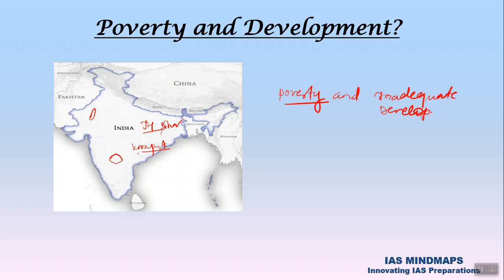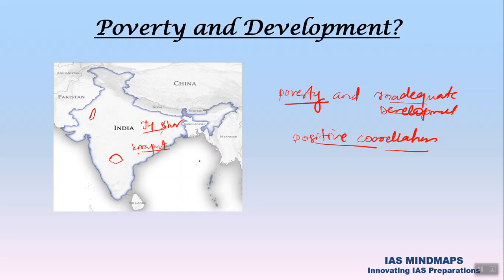This shows that poverty and inadequate development have a positive correlation. If there is poverty, there is inadequate development, and that inadequate development manifests in different aspects like social, economical, and political. Inadequate development means there is a lack of governance, lack of good governance, and lack of basic facilities like road transportation and basic infrastructure needed for a dignified life.